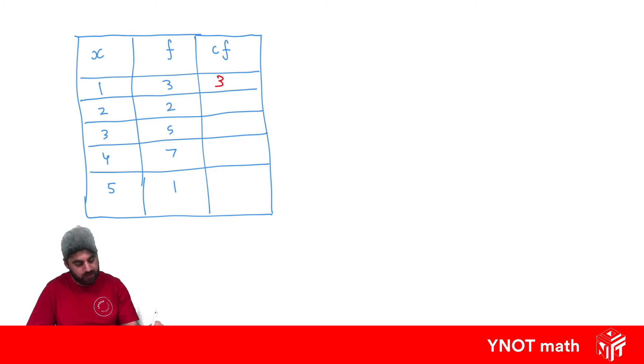So 2 plus 3 is going to give us 5. Our next one of 5 plus 5 is going to give us 10, then 7 plus 10 is 17, and 1 plus 7 gives us 18. And if you've done it correctly, the last cumulative frequency should be the same as your total frequencies.